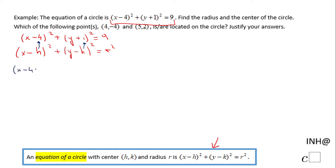I'm going to rewrite that parenthesis. So we're going to start with x minus 4 square plus, and the second parenthesis I'm going to rewrite as a subtraction: y minus negative 1 square. y minus negative 1 is the same as y plus 1, and then equals 9.